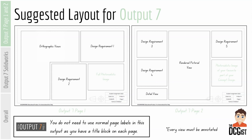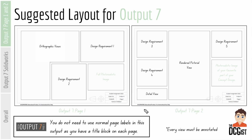Finally, the layout I would suggest for output 7: on page one, I'd have the orthographic views, design requirement one and design requirement two, and then a full photorealistic image of your object — that should balance out quite nicely. Then on your second page, I'd have design requirement three, four and five, a large rendered pictorial view, and then a photorealistic image of your favorite part of your concept design. The reason I put the render pictorial view on page two and the full photorealistic image on page one is that they're going to be reasonably similar, so we just don't want to have them on the same page.